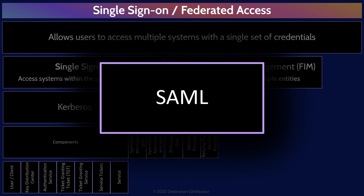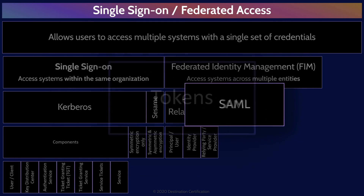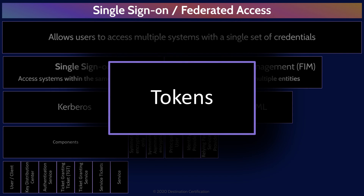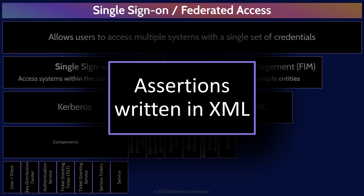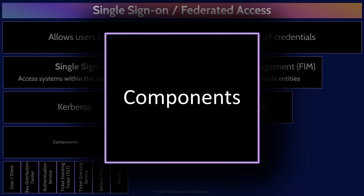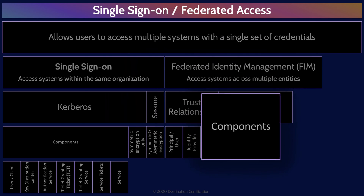There are a number of different protocols that enable federated access. The major one you need to know about is SAML — the Security Assertion Markup Language. Similar to Kerberos relying on tickets, SAML does the same thing, but calls them tokens rather than tickets. These tokens contain assertion statements — things like the user ID, timestamp, and lifetime of the token. Assertion statements contained within a token are written in XML, the Extensible Markup Language. SAML is designed to be used in many different use cases, and as such it is made up of components that make it very flexible and adaptable. We'll go through those four major components now.